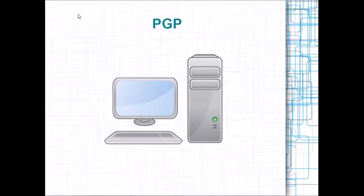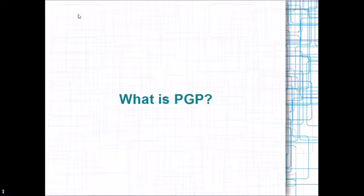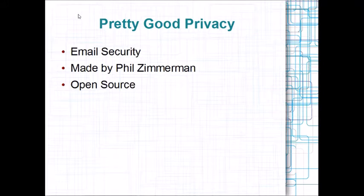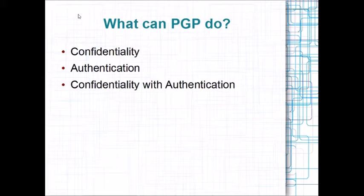Hello, my name is Mike and I'm going to explain what PGP is. PGP stands for Pretty Good Privacy. It's an email security encryption tool that was made by Phil Zimmerman in 1991. It's completely open source. PGP can offer confidentiality and authentication, and it can combine the two of them as well.